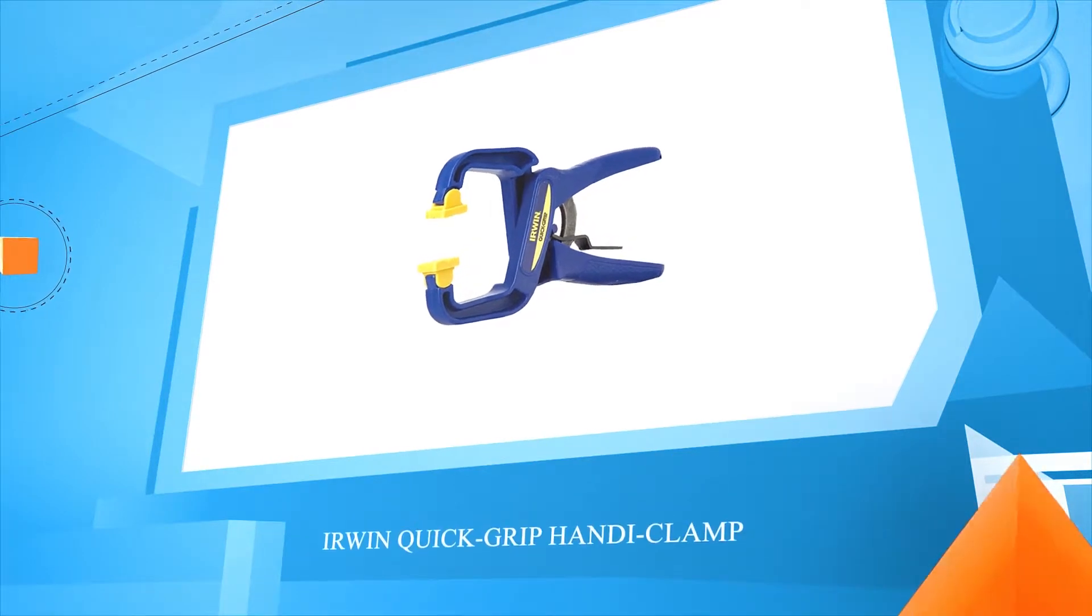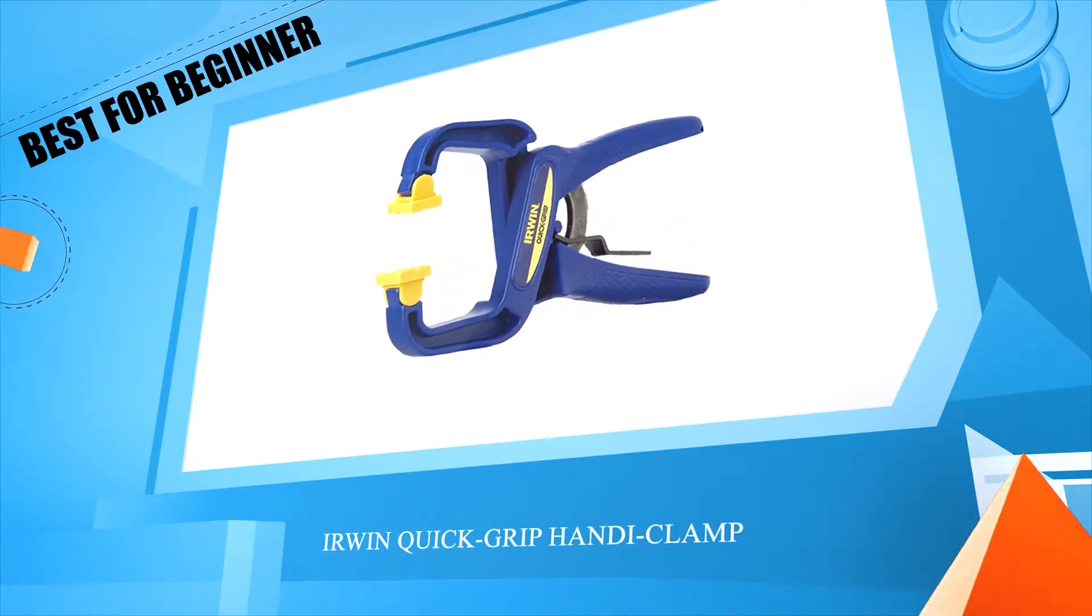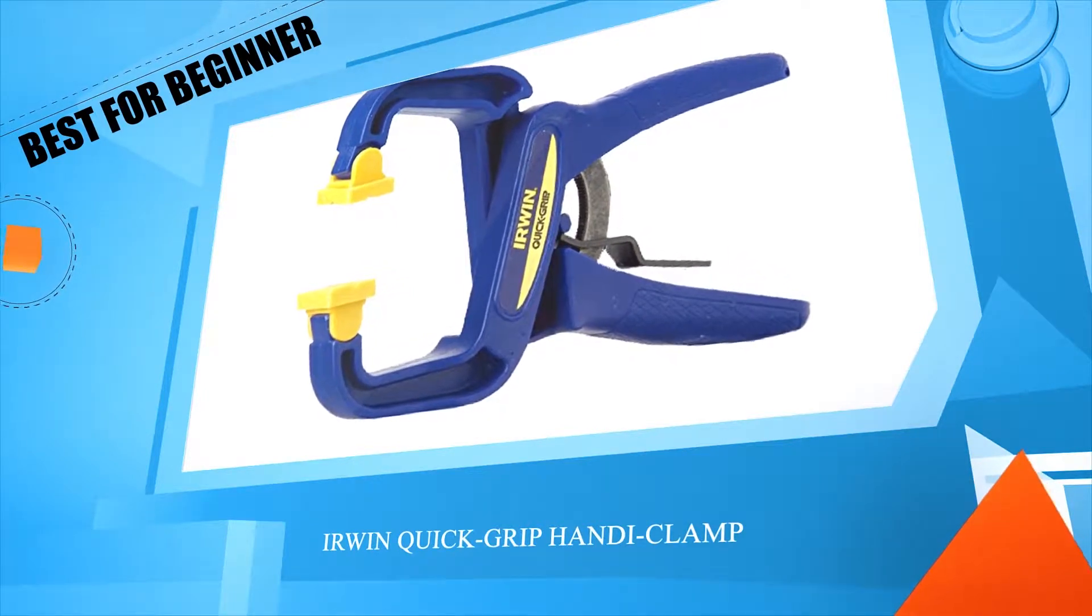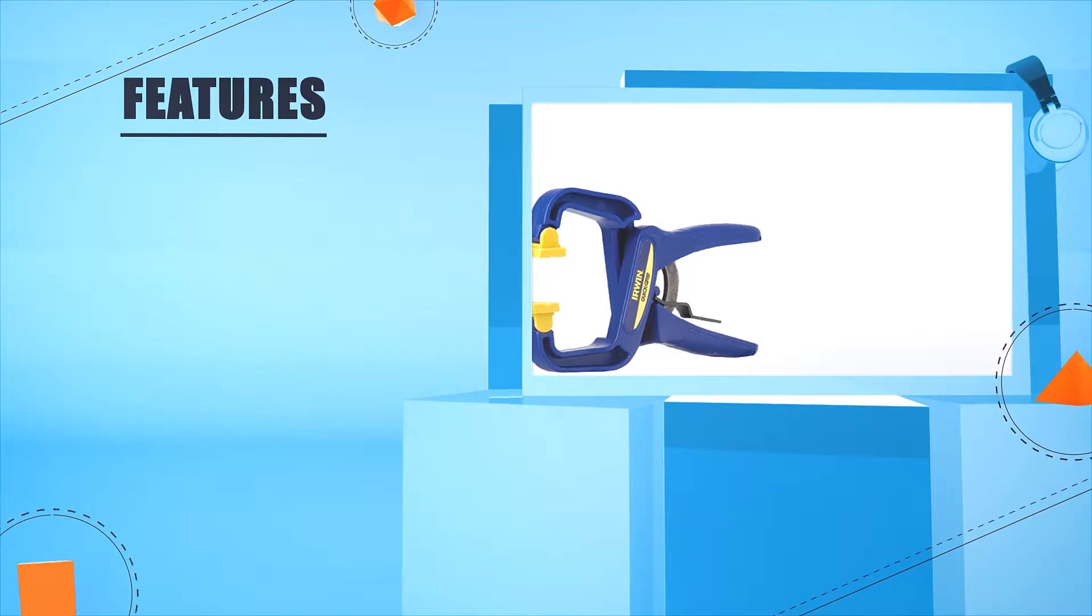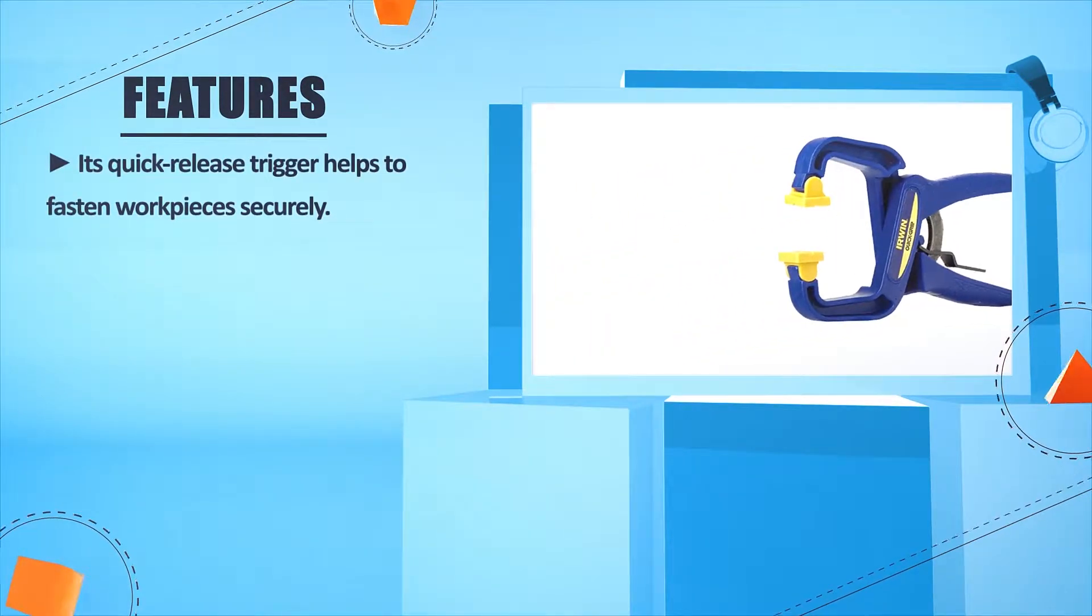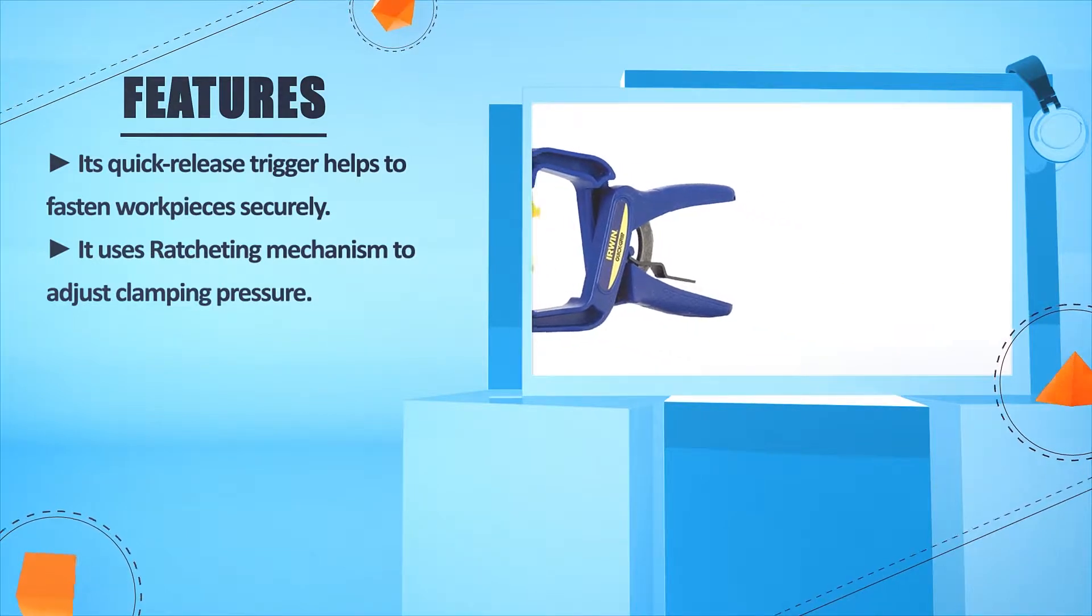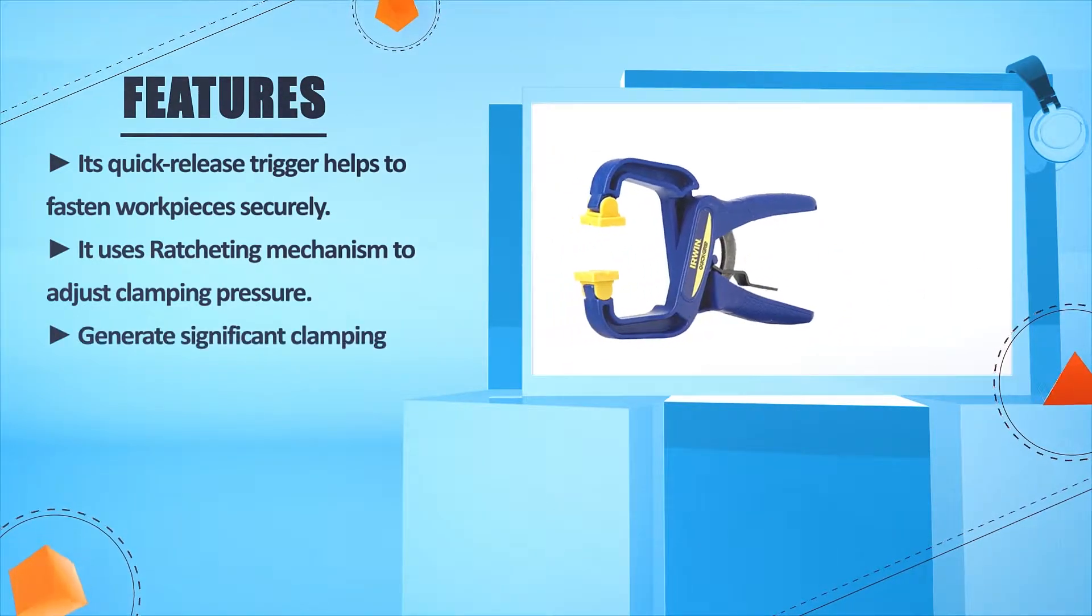Number 5: IRWIN QUICK GRIP AND DECLAP. Its quick-release trigger helps to fasten work pieces securely. It uses ratcheting mechanism to adjust clamping pressure.